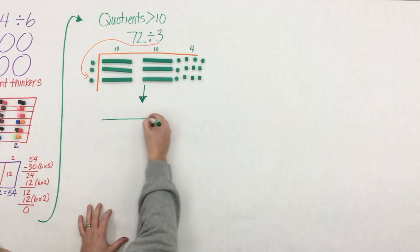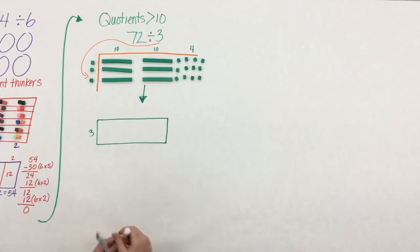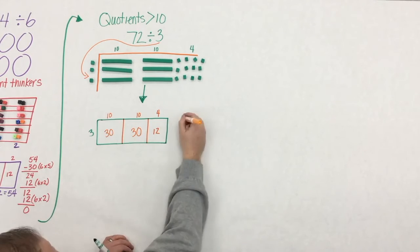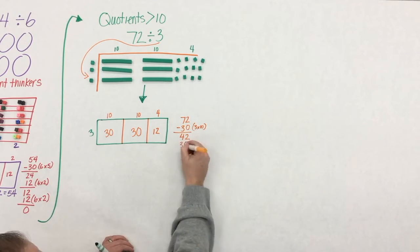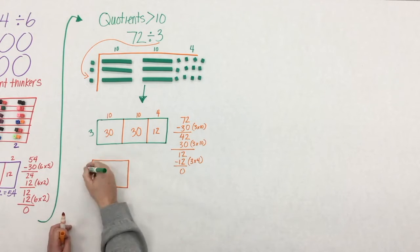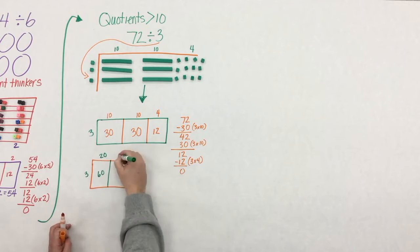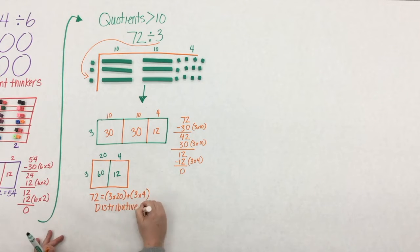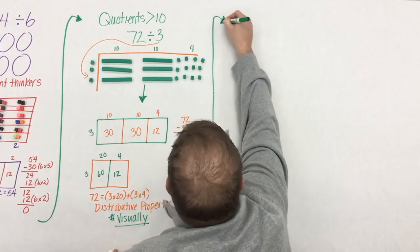So you can see that when we take 72 and we divide it into three rows, we have 24 in each row. And then we want to make that connection from the concrete with the base 10 blocks to the representation. And how do we record our representation in a written expression? And some students might begin to collectively group their 10s. And that's where the 20 came from. The best part about this is that students are making a connection back to multiplication by using the distributive property, and they're seeing it visually.